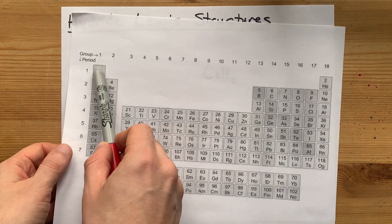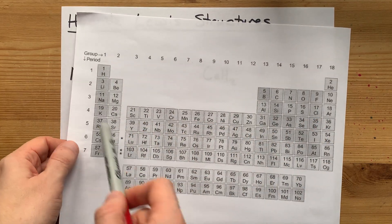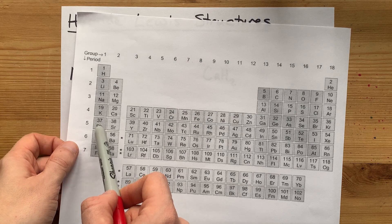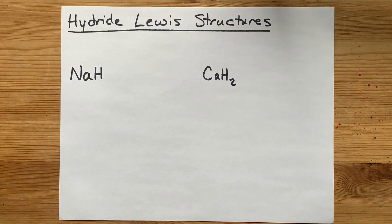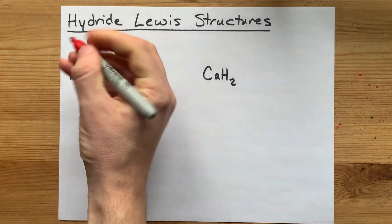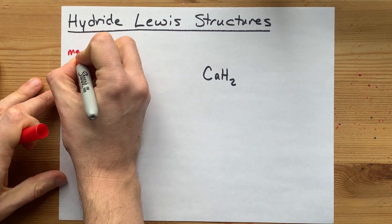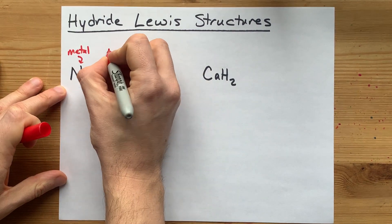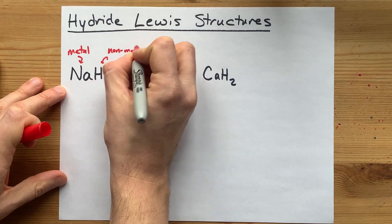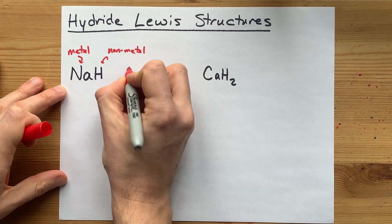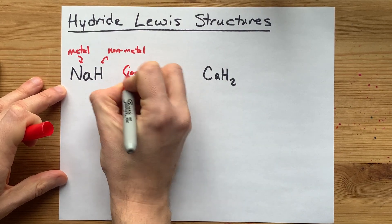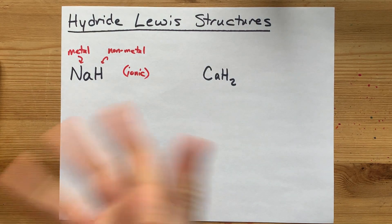When a non-metal bonds with a metal, like sodium or potassium or calcium, the metal will give away its electrons, and the non-metal will accept those electrons. That's the definition of ionic bonding.